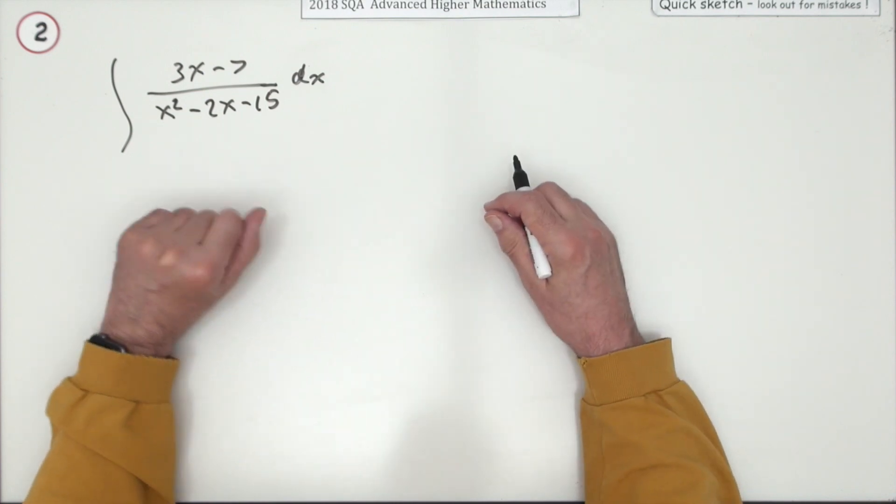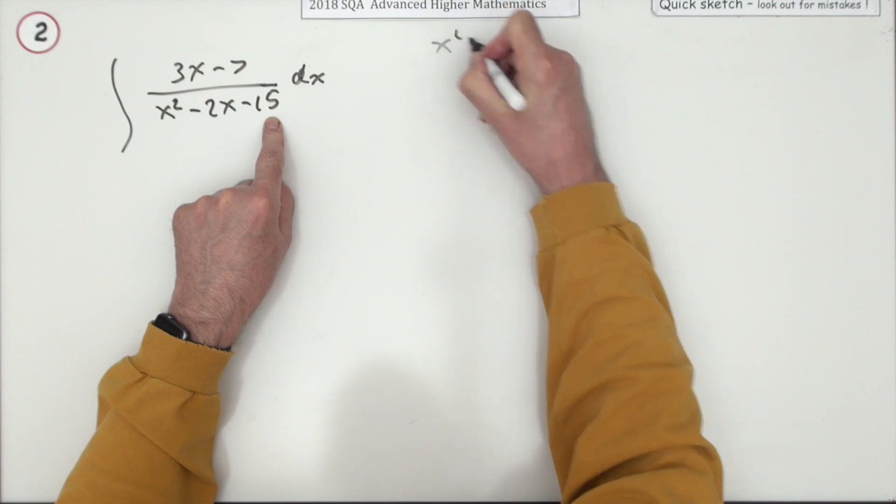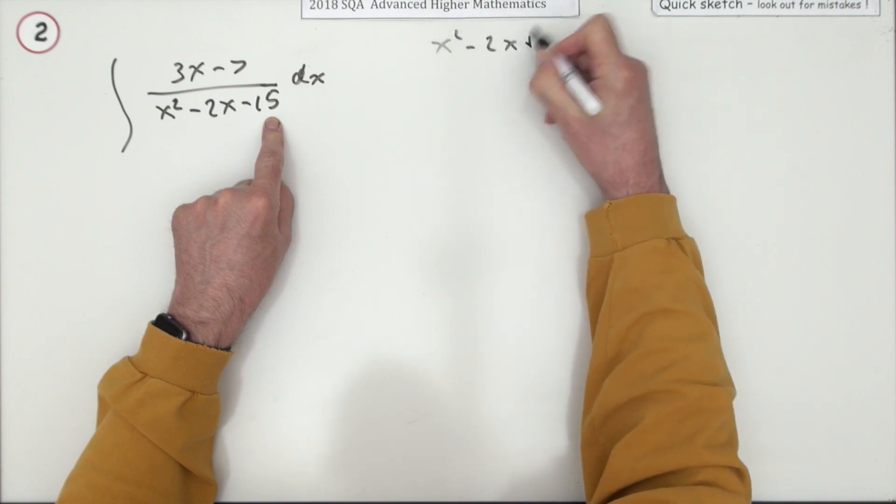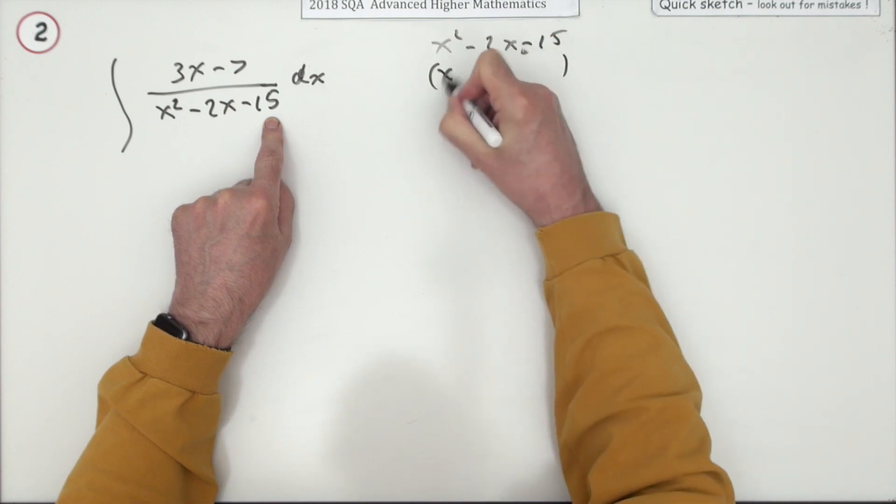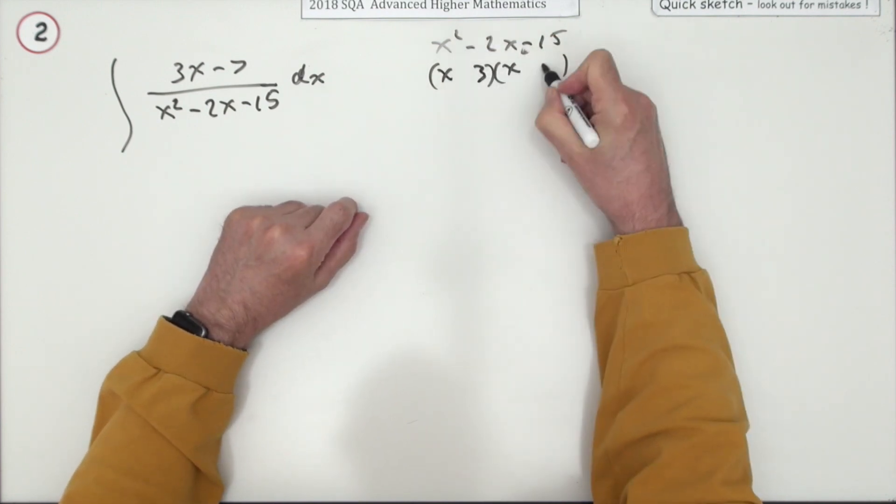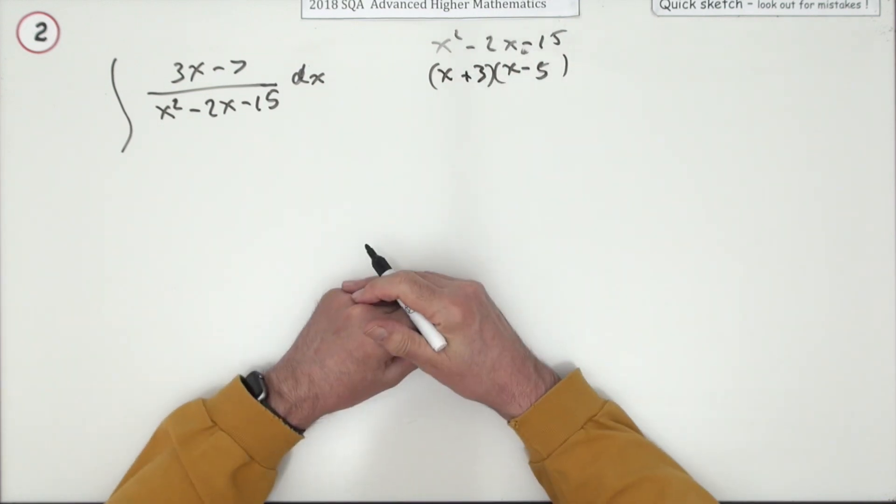The first step would be to factorize that x² - 2x - 15. It factorizes to x times x... that must be 3 and 5. The negative goes to the larger one, so that's the factorization x + 3 times x - 5.